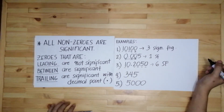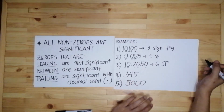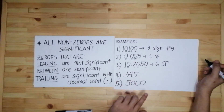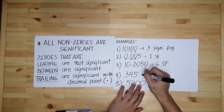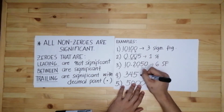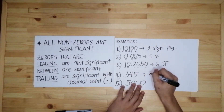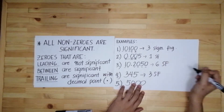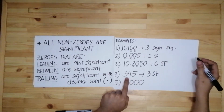Next, we have number four: 3, 4, 5. You can't see any zero numbers — those are all non-zero numbers, so all of them are significant figures. There are three significant figures because there are no zeros.